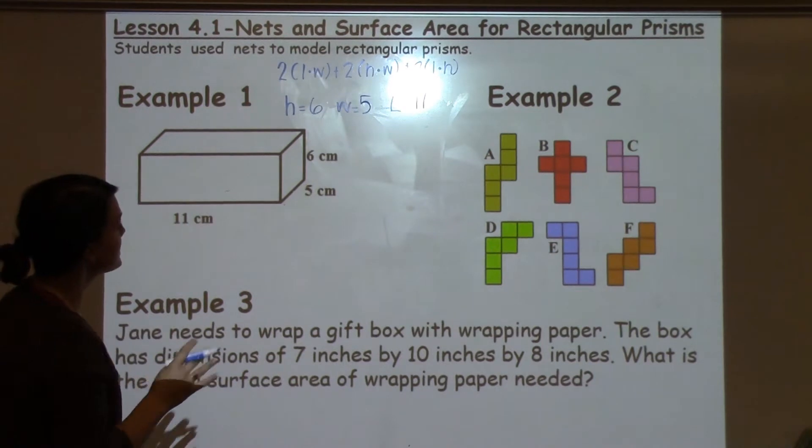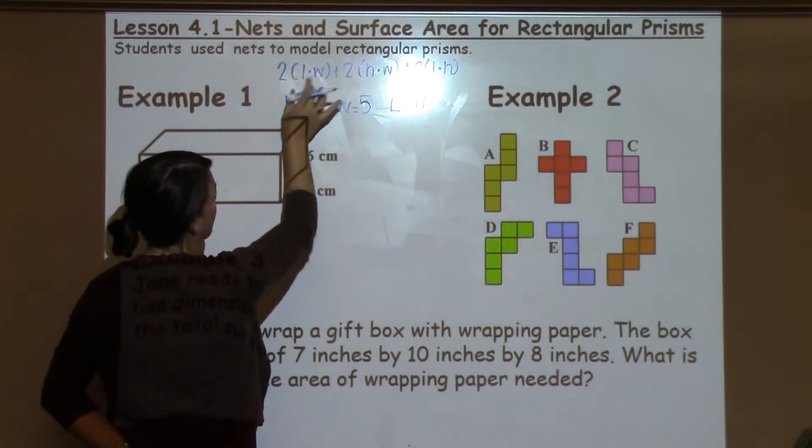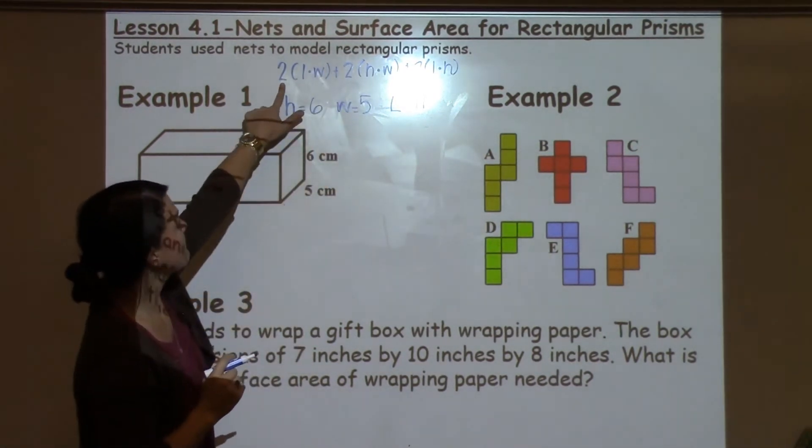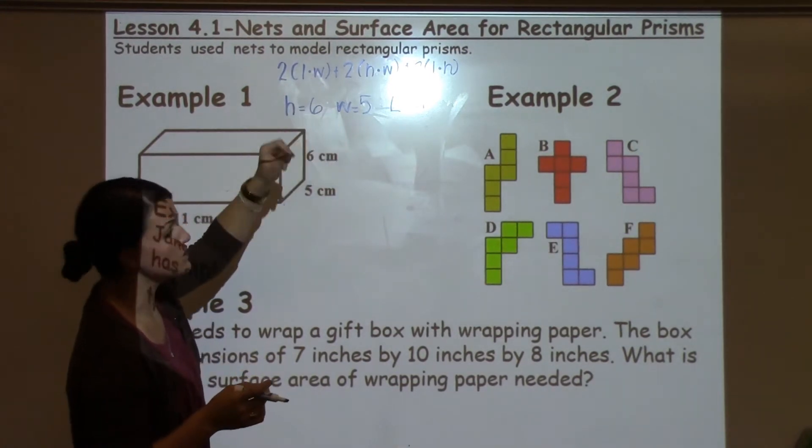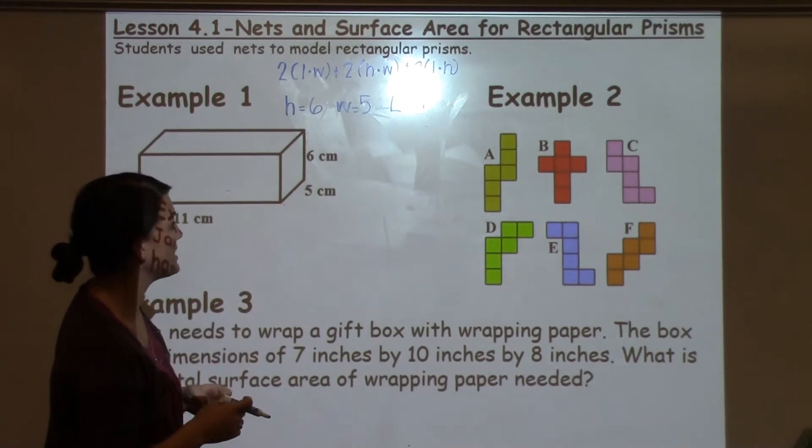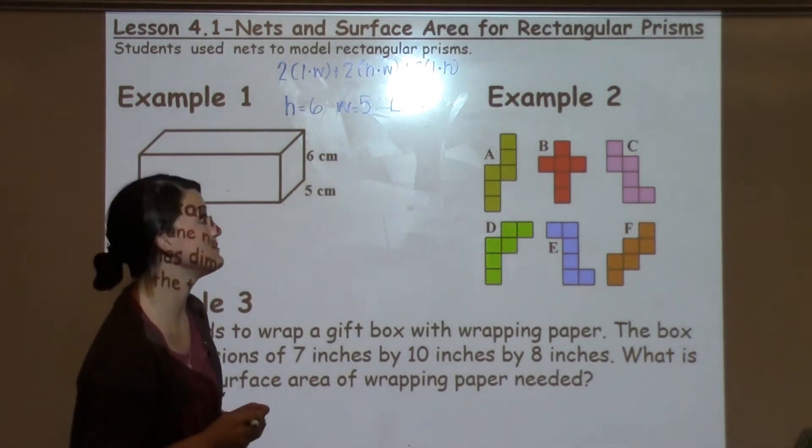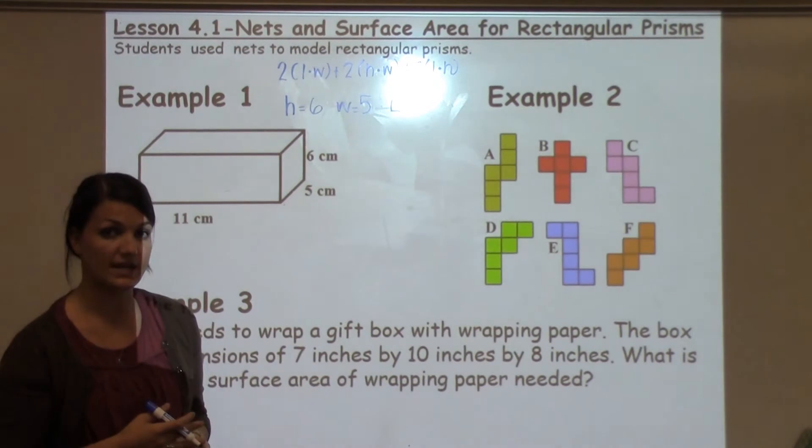So now what I'm going to do is just plug it into this formula. This formula here shows that if I take 2 times the length times the width and add it to 2 times the height times the width and then I add it to 2 times the length times the height, I'd be able to find the surface area.